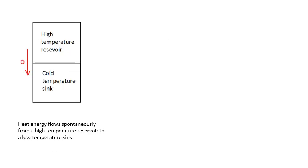So looking at this diagram, we have a high temperature reservoir, so a substance at a higher temperature, something which has lots of heat energy. And we have a cold temperature sink. And so heat energy is going to flow from the high temperature reservoir to the cold temperature sink. Heat energy flows spontaneously from a high temperature reservoir to a low temperature sink.